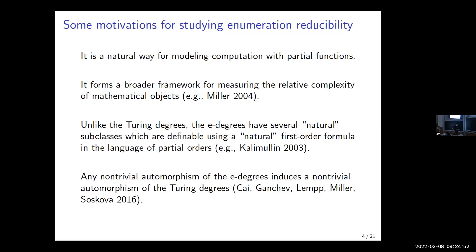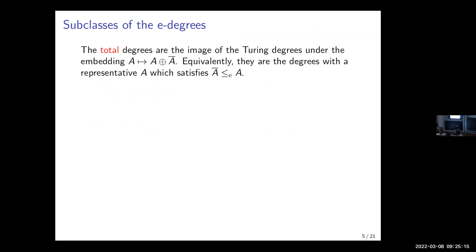It is known that any non-trivial automorphism of the E degrees will induce a non-trivial automorphism of the Turing degrees. Whether there is a non-trivial automorphism of the Turing degrees is a long-standing open problem, so the E degrees might give us some perspective on that. This talk is mostly about defining several subclasses of the E degrees, hoping to find more subclasses that are first-order definable and thereby restrict automorphisms that might appear.